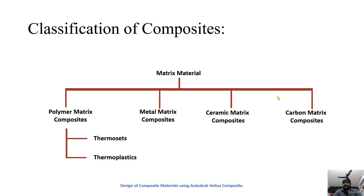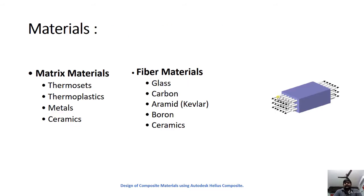If the matrix phase is a polymer, we call it a polymer matrix composite. If the matrix is ceramic, it is a ceramic matrix composite. If it is metal, it is a metal matrix composite. Fiber materials include glass, carbon, boron, and ceramics, though many more matrices and fibers are available; these are only some of the most widely used in industry.